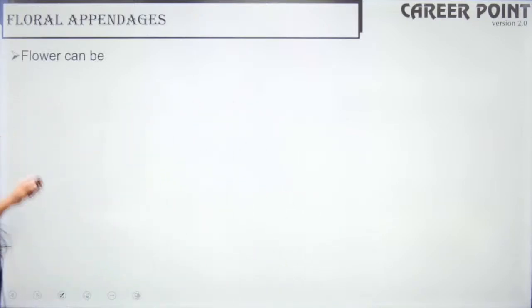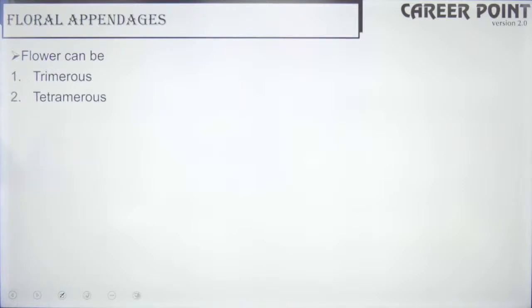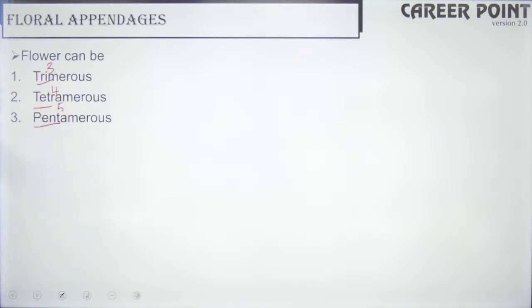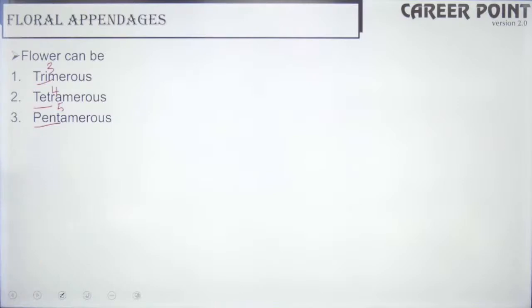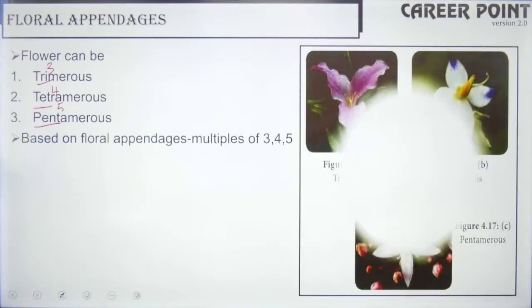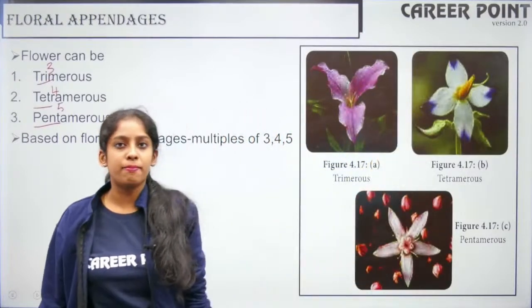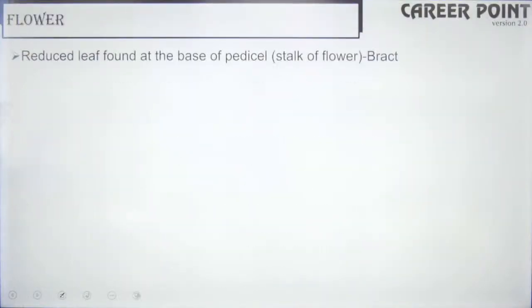Regarding floral appendages, your flower can be trimerous, tetramerous or pentamerous. Trimerous means three or multiples of three; tetramerous is four or multiples of four; pentamerous is five or multiples of five. This refers to the number of petals.